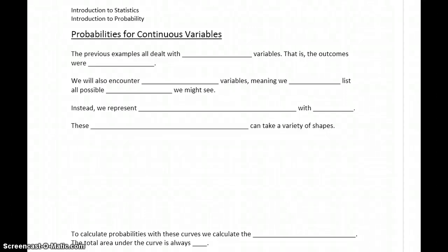The previous examples that we've looked at have all dealt with discrete variables. Discrete variables are variables in which the outcomes are countable.